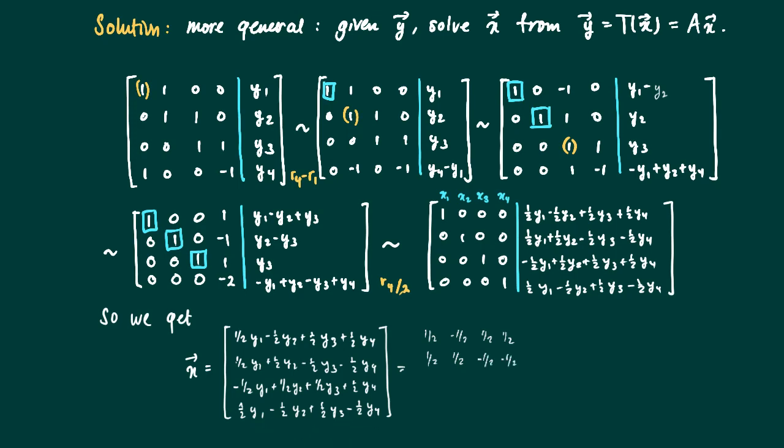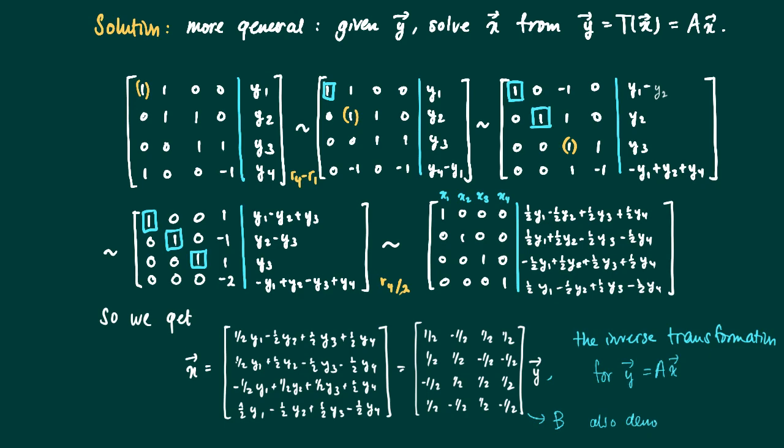Then over here there is a matrix vector product of a matrix with the vector y. A half, minus a half, plus a half, minus a half. So this is the matrix we obtain times the vector y. So actually we see that in order to find x back we need a matrix vector multiplication. So this is an inverse. The inverse is a linear transformation as well. And it's called the inverse transformation for y is A times x. So if this is the matrix B, then we also denote it as the inverse of the matrix A.